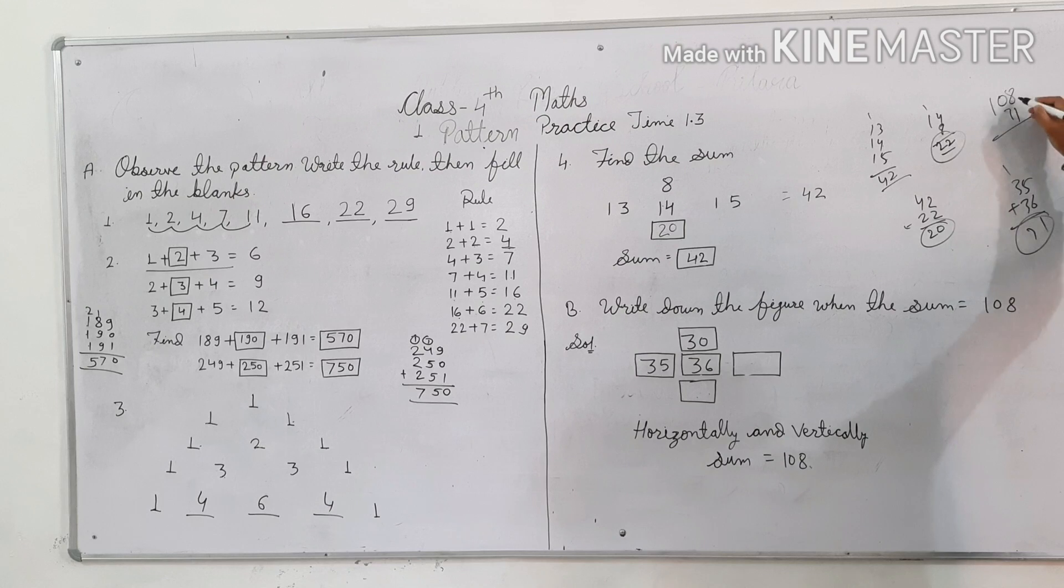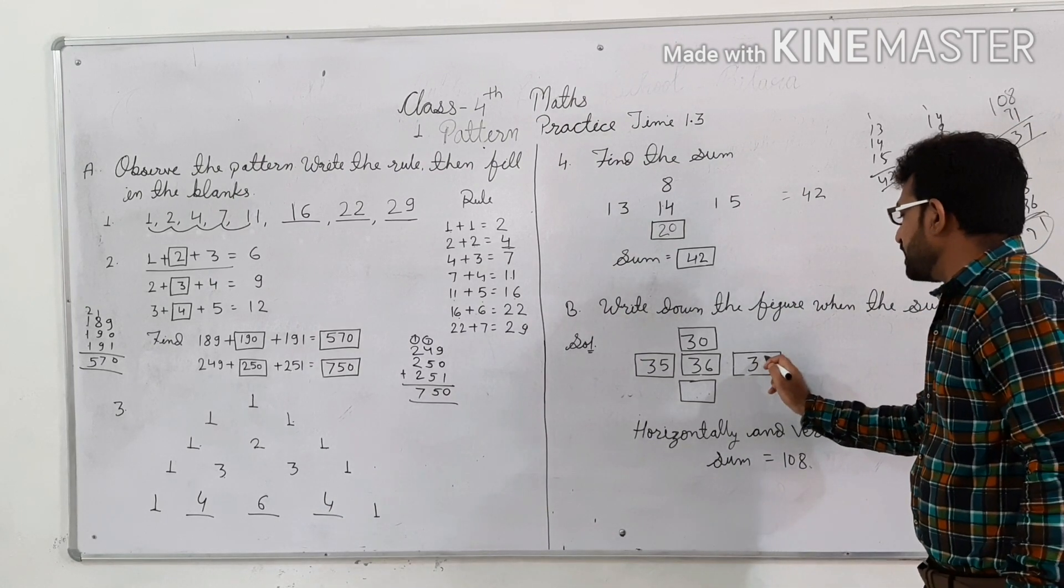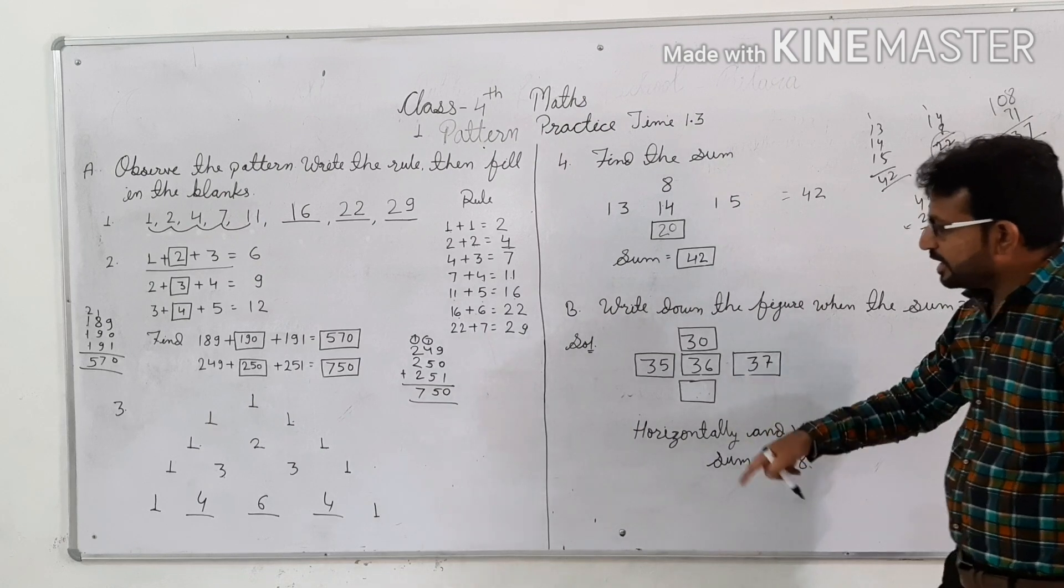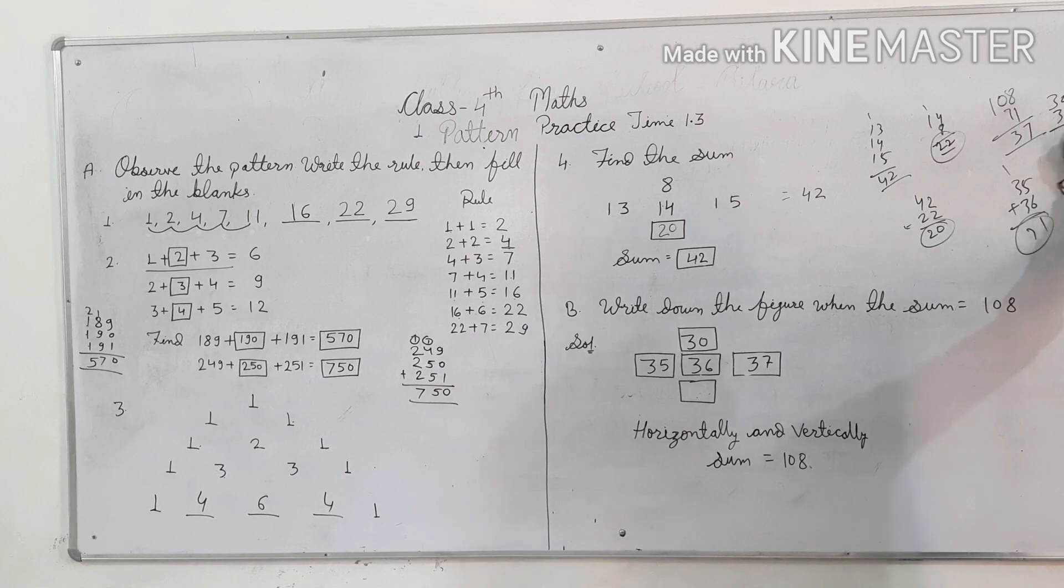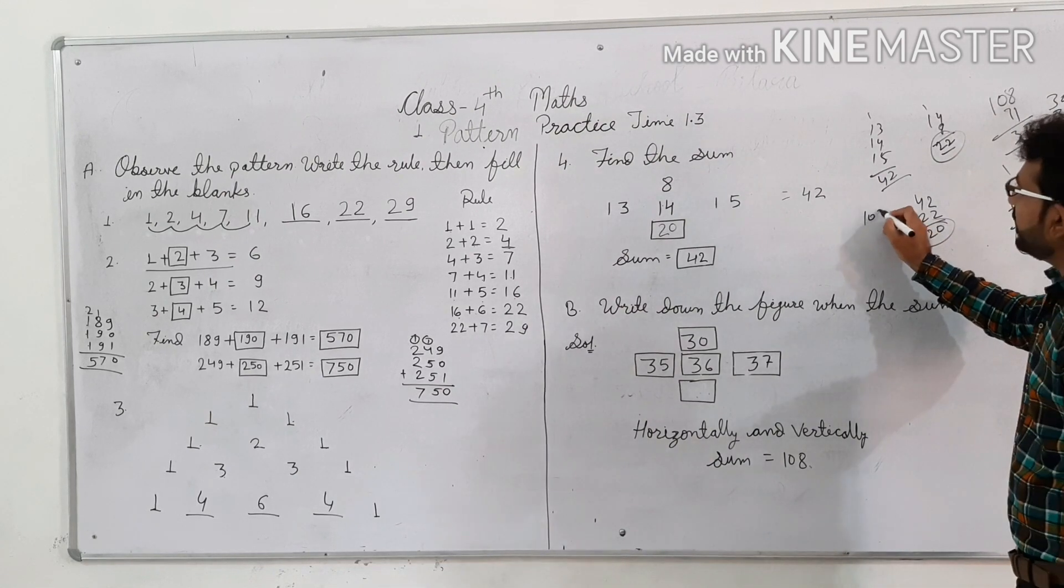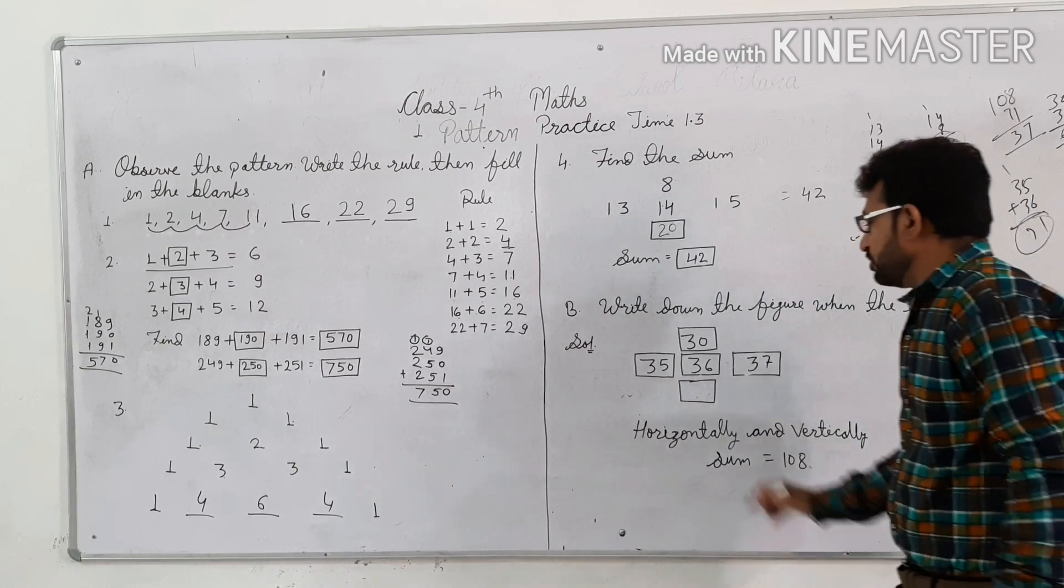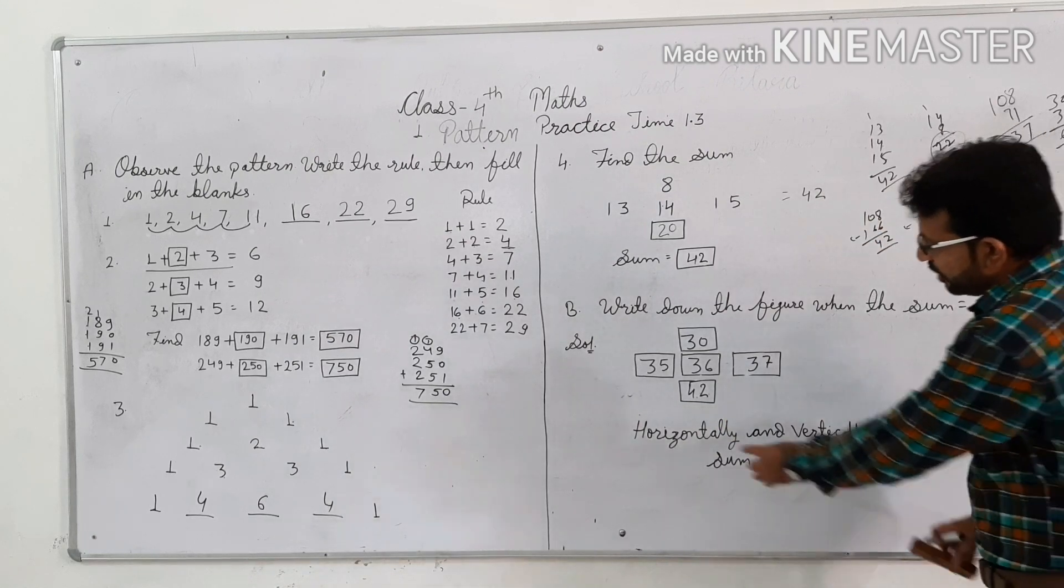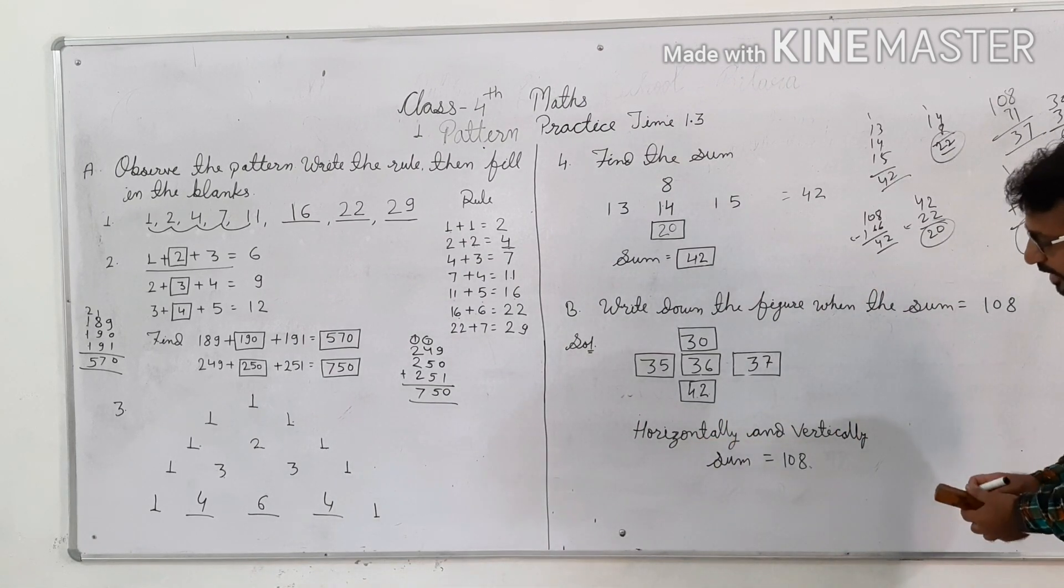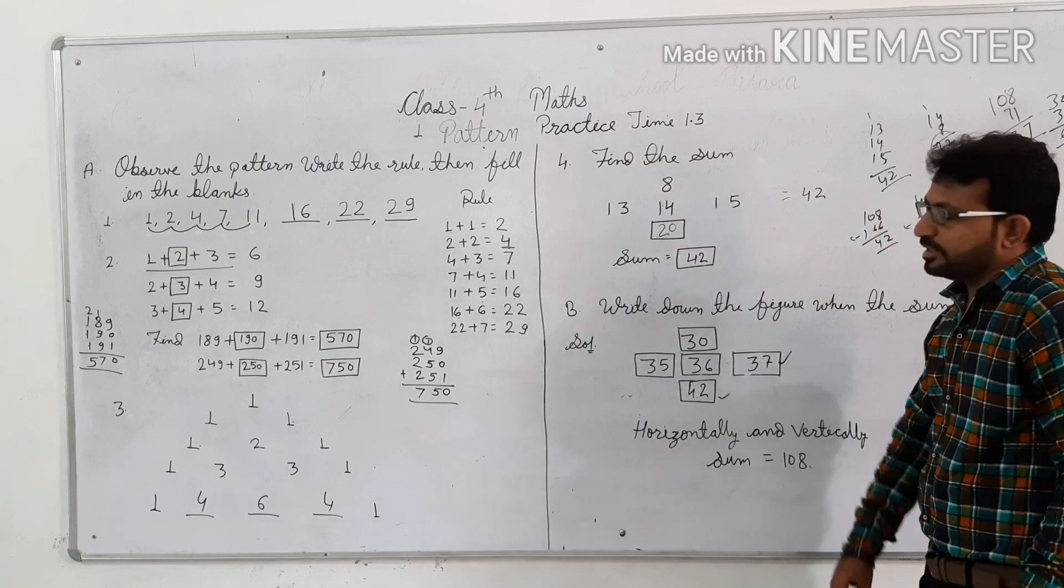So our answer is 7 and 3, that means 37. Then we put vertically 30 plus 36, 6 and 6, 66. So 108 minus 66 is 42. So here's the answer.